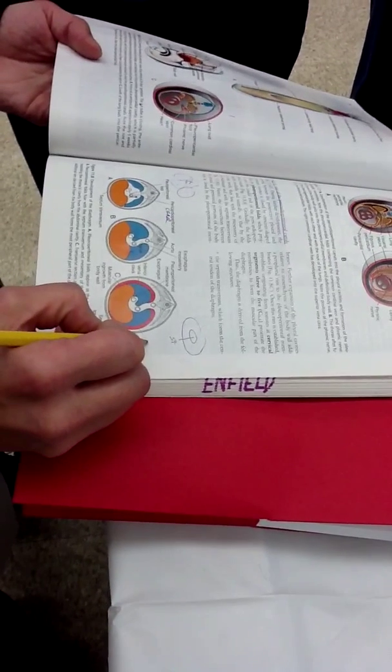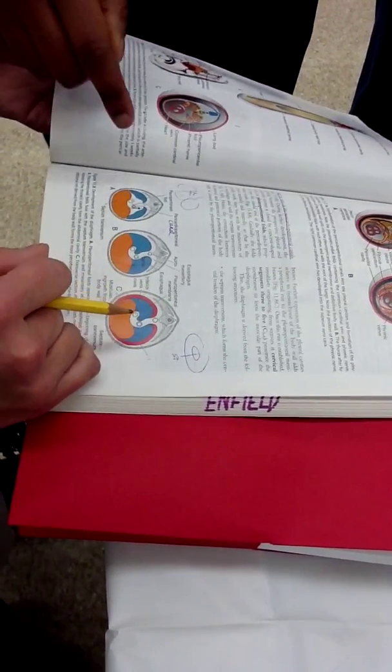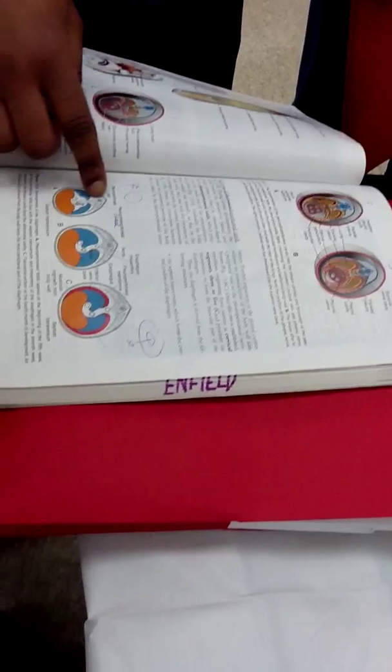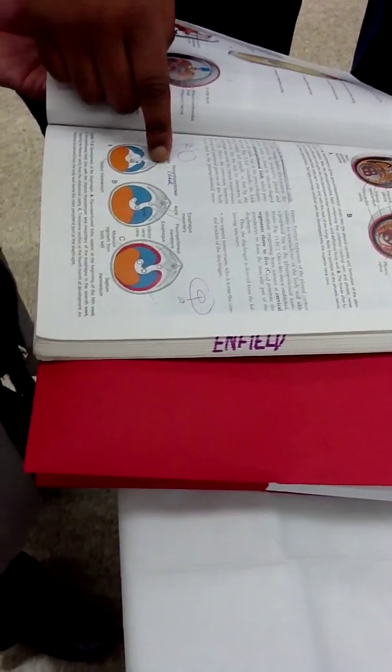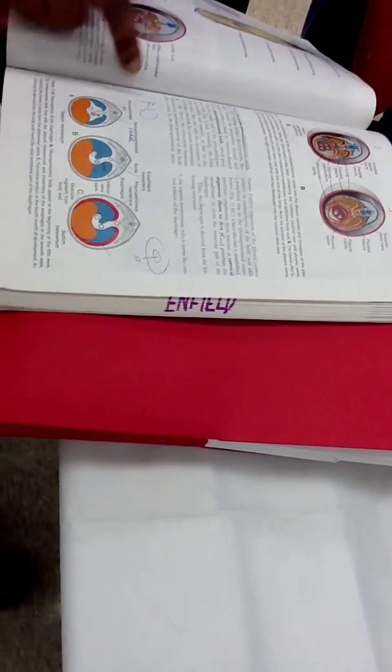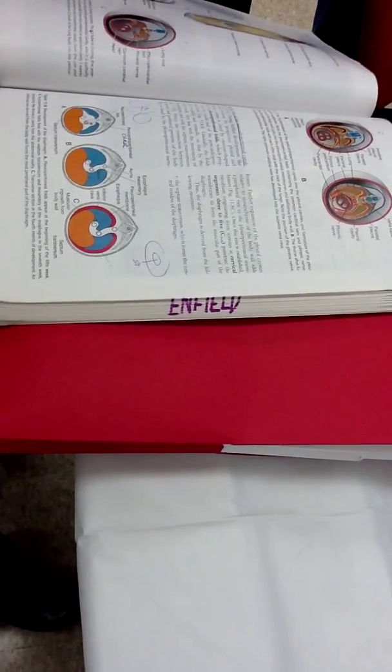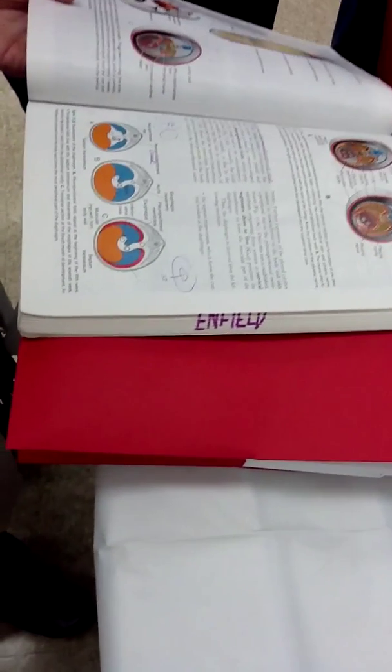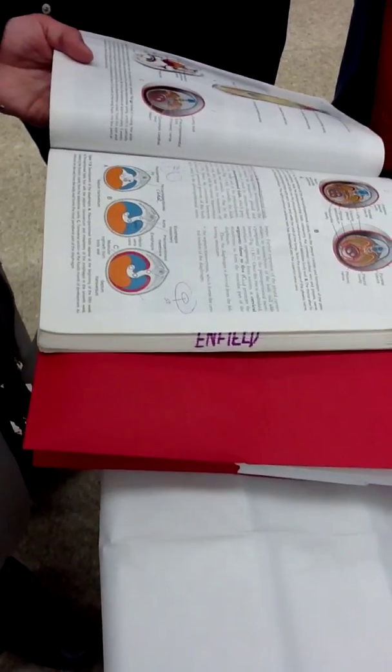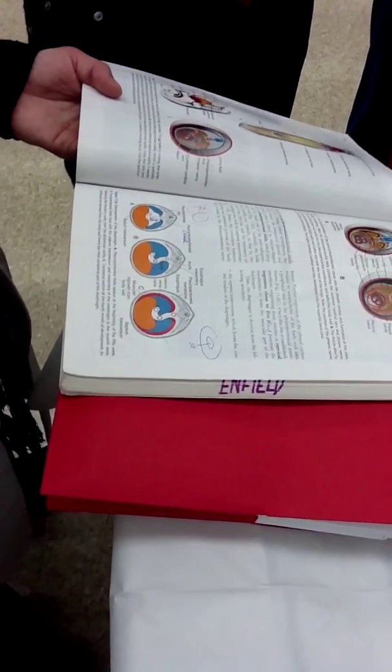So that will be innervated by the intercostal nerves. But most of it's phrenic. Right. Okay. So most of this... So the way that this fold was sort of separating the lungs from the heart. Yes. This one's separating the pleural part. Right. So bringing the thoracic cavity separate from the abdominal part. Okay.